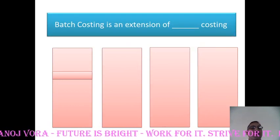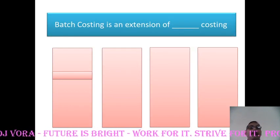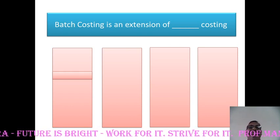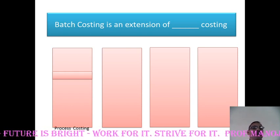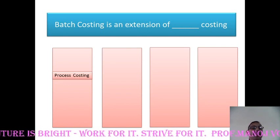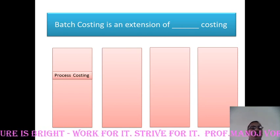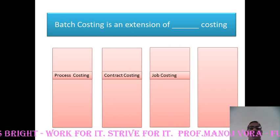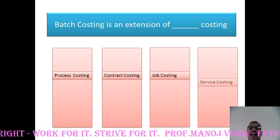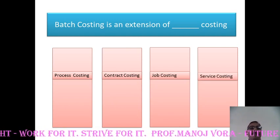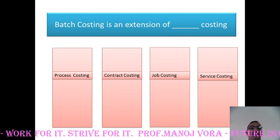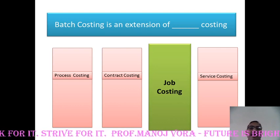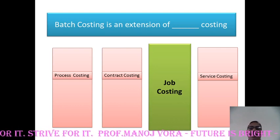Your next question: batch costing is an extension of dash costing. Your first option process costing, second option contract costing, third option job costing, and fourth option service costing. Here is your answer: batch costing is an extension of job costing.